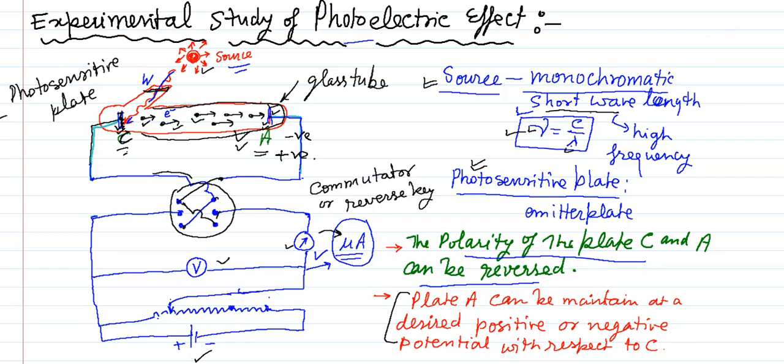So how you can change the potential of anode plate or collector plate? This can be possible by the variable resistance. If you will keep the resistance here right now, this is first position, suppose there is a very small resistance in between the emitter voltage and the collector voltage. But if you are increasing the distance, it means you are increasing the value of the resistance.